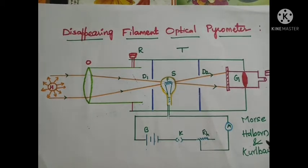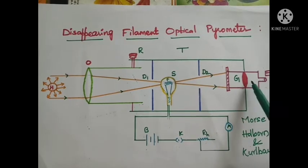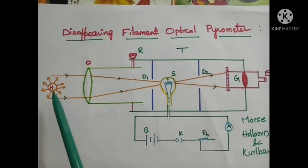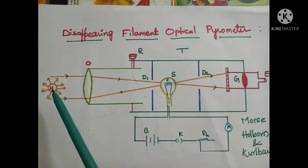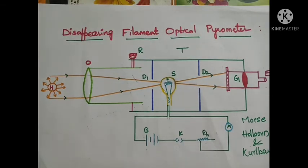With the help of these diaphragms, we can control or limit the rays coming from the source. One more component is a red glass filter G, which is located before the eyepiece, so with the help of this filter we can observe things clearly. The hot body H is placed in front of the objective lens. This is all about the construction of the disappearing filament optical pyrometer.